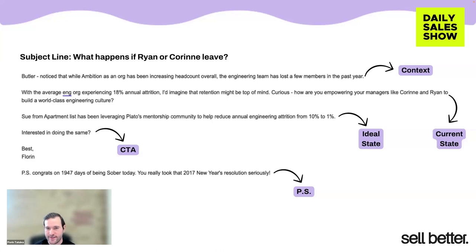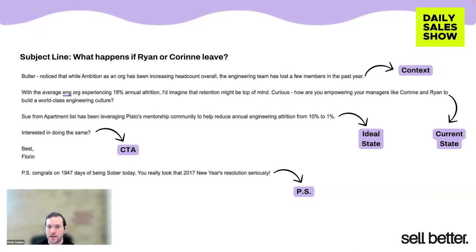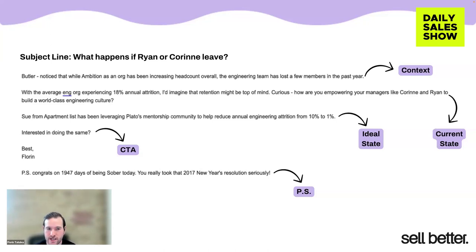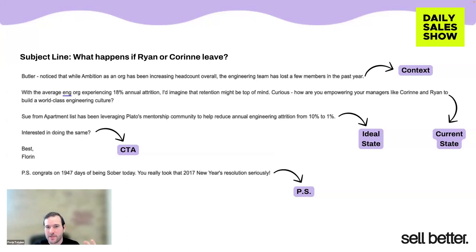The other thing to mention: call to actions. I think it's pretty standard knowledge now, but being more soft — like 'interested in doing the same?', 'is this worth exploring?', 'is this on your radar for 2024?' — and then the PS. The PS is where I like to go one-to-one personalization, especially for tier A accounts where I want to spend more time to break through the noise. For example, Butler very publicly has a website where he tracks all his days of sobriety. Calling that out specifically in the PS — where it might look a little wonky if I tried to tie it into the body of the email — I just do that in the PS, which is almost like a separate mini email in itself, breaking from the relevant topic you're covering.